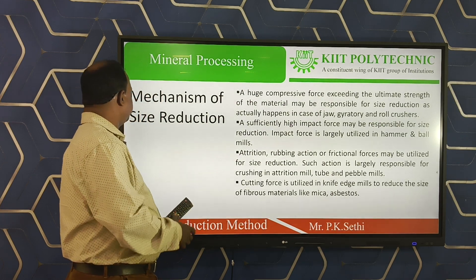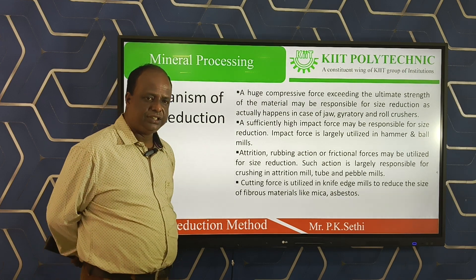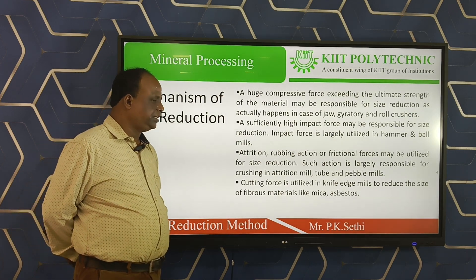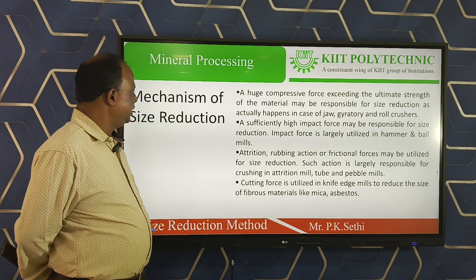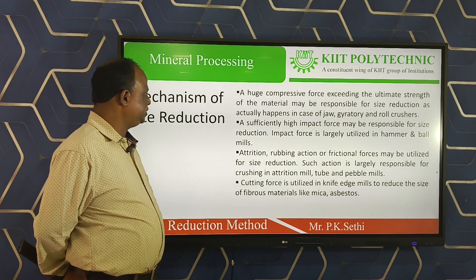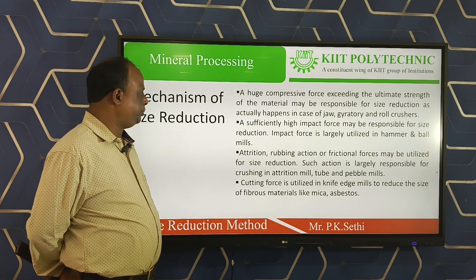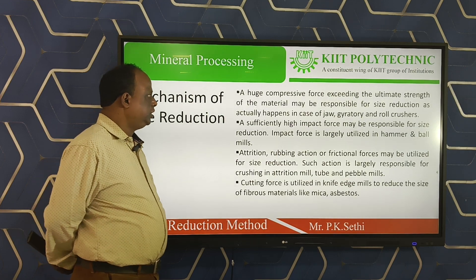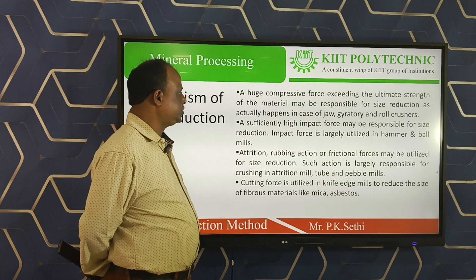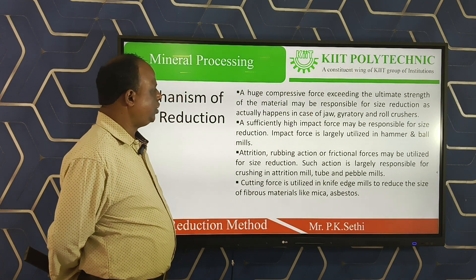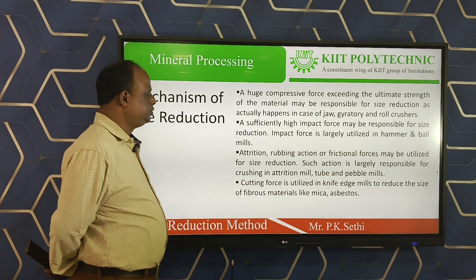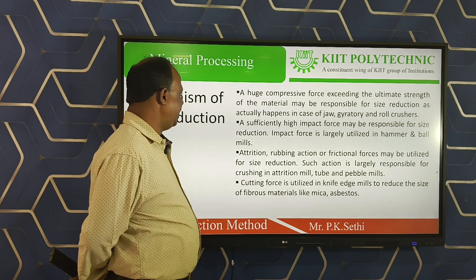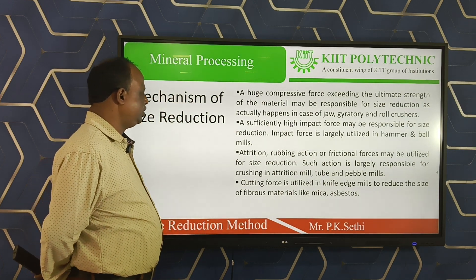Next, what are the forces used for the size reduction process? That means what are the mechanisms of size reduction. During the size reduction process, we generally use four types of forces: compressive forces, impact forces, frictional forces, and cutting forces. Compressive forces are used in the primary crusher, that is the jaw crusher, gyratory crusher, or the roll crusher. Impact force is used to size-reduce minerals using equipment such as the hammer mill or ball mill.